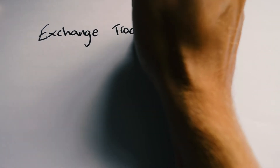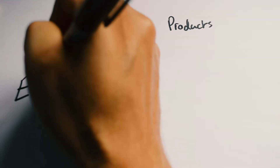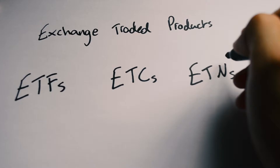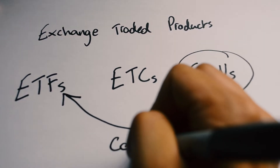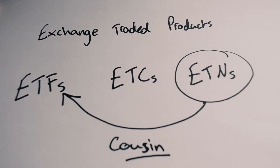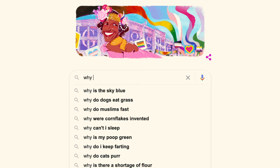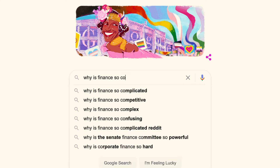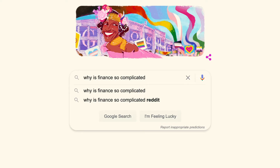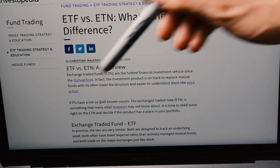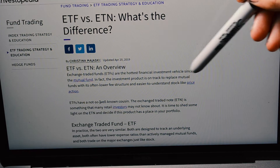Before we get into why the oil price crashed, we need to do some housekeeping. We need to explain exactly what futures contracts are and how the USO fund works. I'm going to be referring to the different funds as exchange traded products — an umbrella term covering exchange traded funds (ETFs), exchange traded notes (ETNs), and exchange traded commodities (ETCs). ETCs are basically the cousin of the ETF, but where you don't have a claim to the underlying investment.